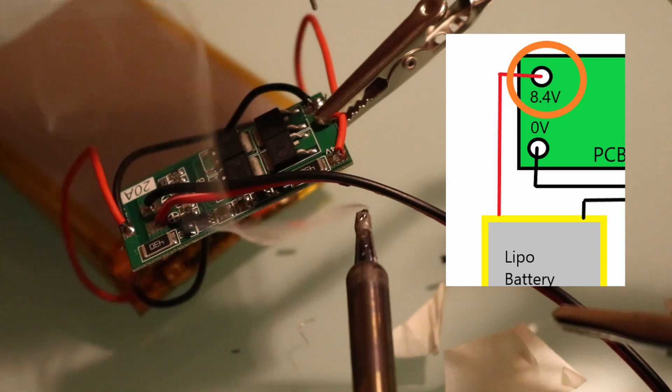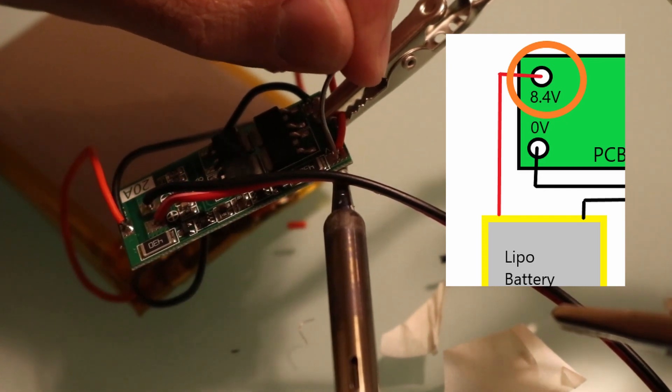And the final wire to solder is the positive 8.4 connection point.